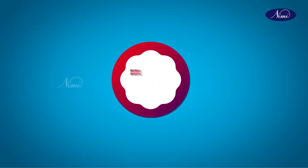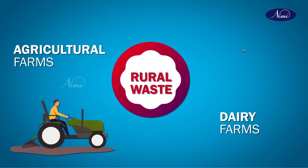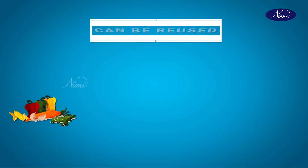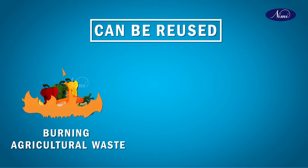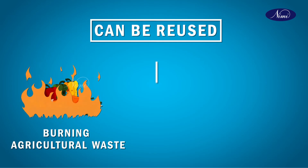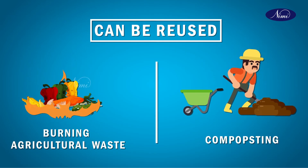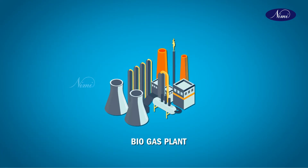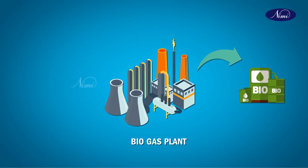Rural waste is the waste from agricultural and dairy farms. This can be reused by burning agricultural waste and composting. The waste produced by man and animals is now used in the production of fuel by biogas plants.